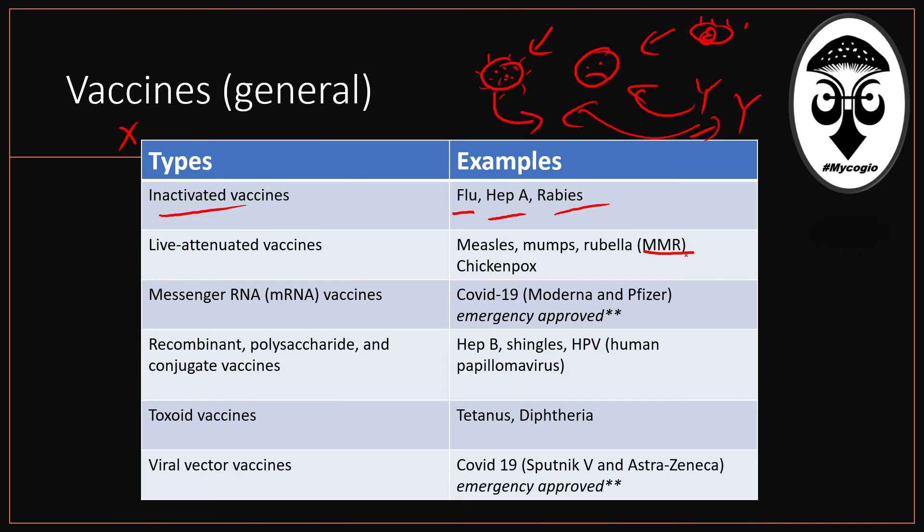The MMR vaccines cover diseases that were pretty bad in the past. We don't see them anymore, thanks to the MMR vaccines and the chickenpox vaccine. Chickenpox is actually very peculiar. If you are a little bit older, maybe more than 30 or 35, you used to go to what were called 'chickenpox parties,' where parents would bring children to get infected. After going through the illness for a couple of days, you would be immune to it.